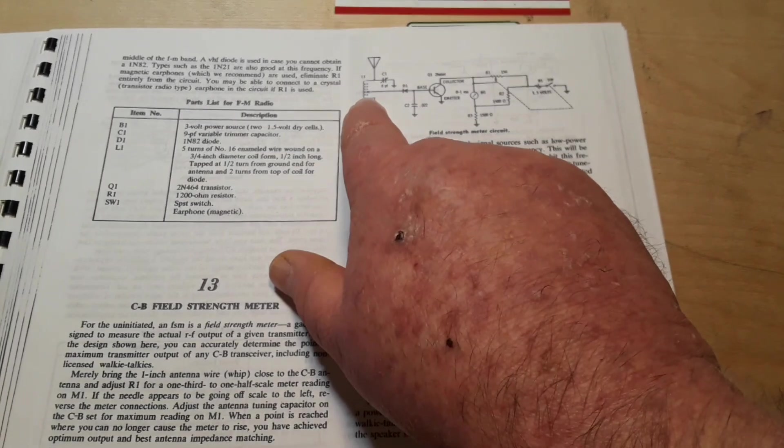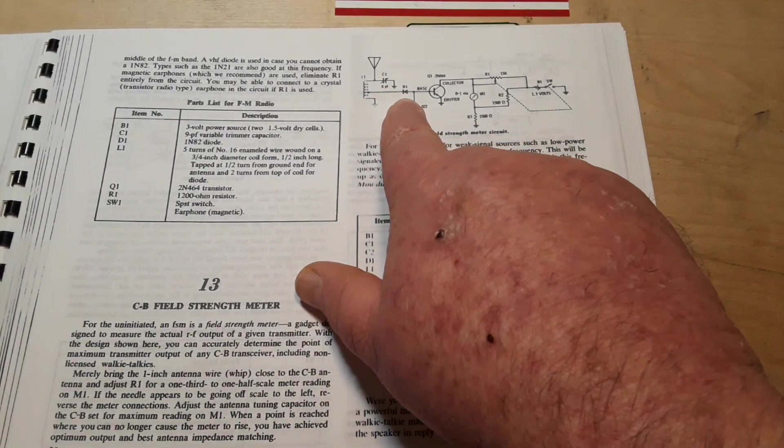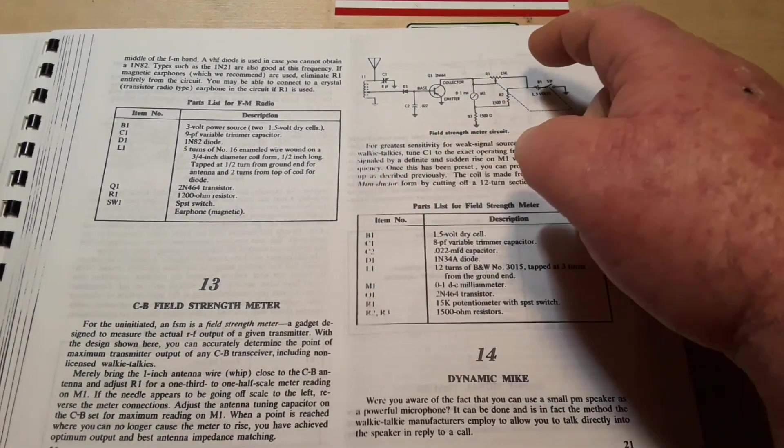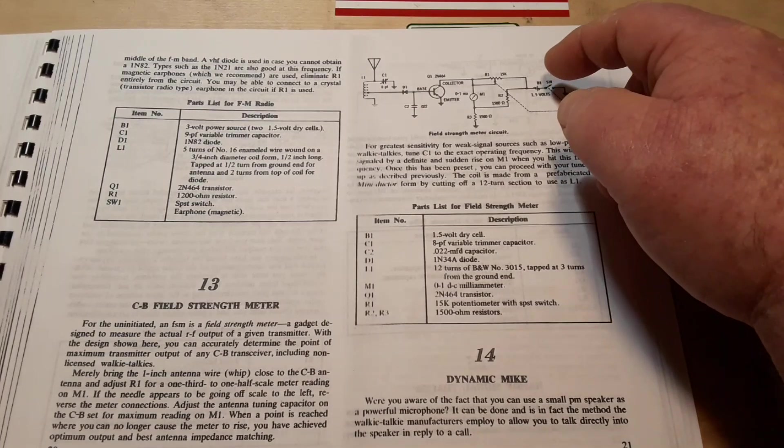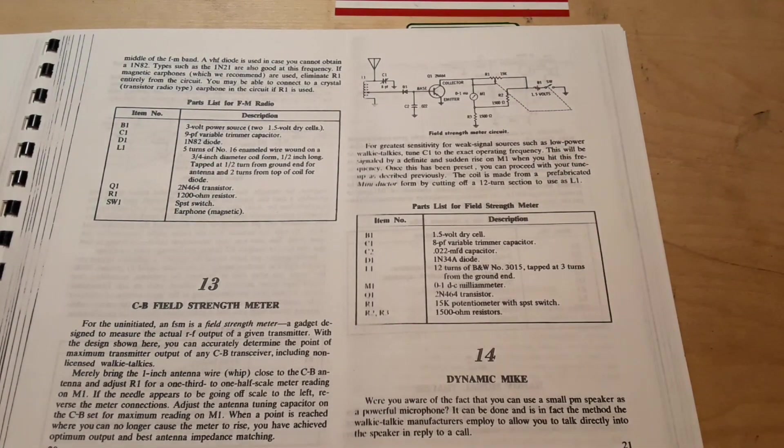Merely bring a one-inch whip close to the CB antenna and adjust R1 for one-third to half-scale meter reading on M1. Here's your circuit. We have an antenna. We have a tapped coil there. Diode. PNP transistor. Our power source. And a potentiometer for adjustment.